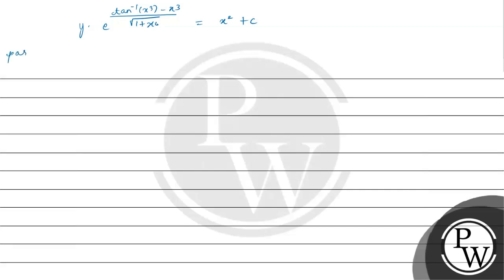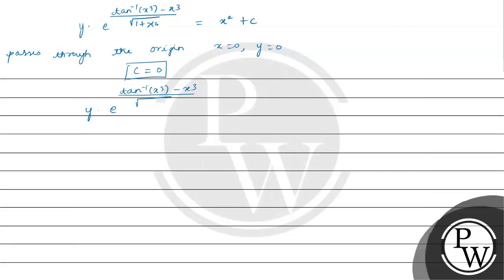Since the curve passes through the origin, x = 0 and y = 0. Substituting x = 0 and y = 0, we get c = 0. So the solution of the differential equation is y · e^(tan⁻¹(x³) − x³/√(1+x⁶)) = x².